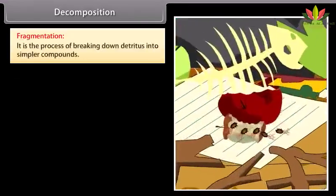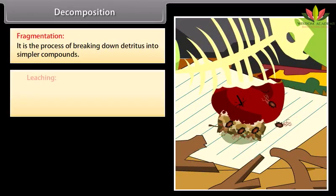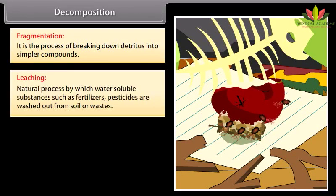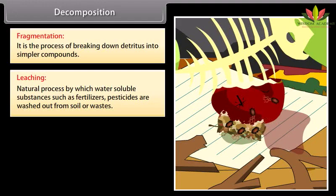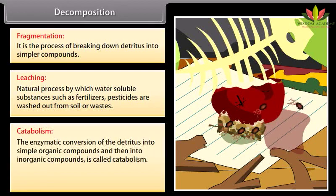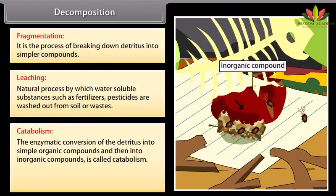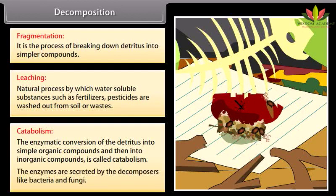Fragmentation: the process of breaking down detritus into simpler compounds. Leaching: the natural process by which water-soluble substances such as fertilizers and pesticides are washed out from soil or wastes. Catabolism: the enzymatic conversion of the detritus into simple organic compounds and then into inorganic compounds. The enzymes are secreted by decomposers like bacteria and fungi.